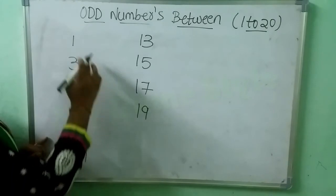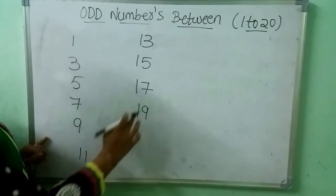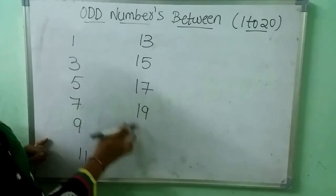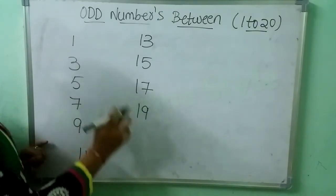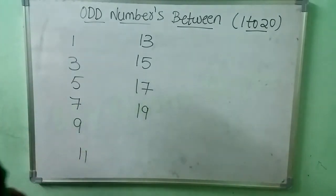So these are the odd numbers from 1 to 20. Thank you for watching this video.